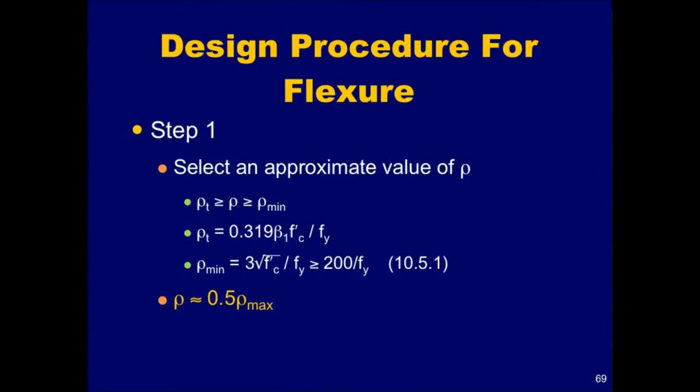The first step in the procedure is to select an approximate value of the tension reinforcement ratio rho. The ratio should be less than or equal to rho sub t, but greater than or equal to the minimum reinforcement ratio prescribed in section 10.5.1.